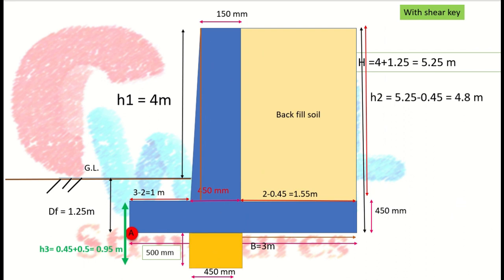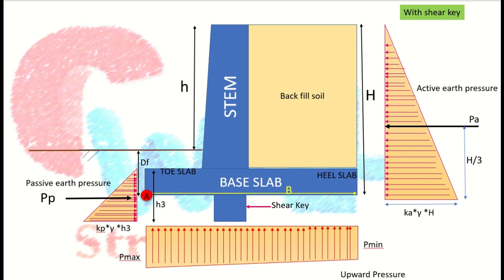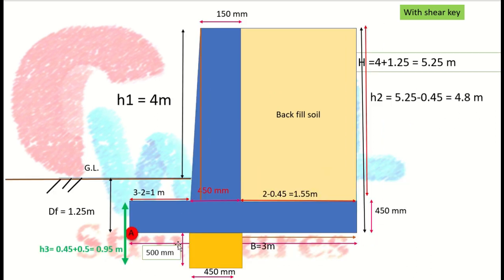This is the complete pressure diagram of the retaining wall with the shear key. The shear key is a rectangular block. For determining its size, the width is taken as 450 mm. The depth is determined by trial and error. The total height for passive earth pressure calculation with the shear key is now 0.45 m plus the depth of the shear key, giving approximately 0.95 meters.